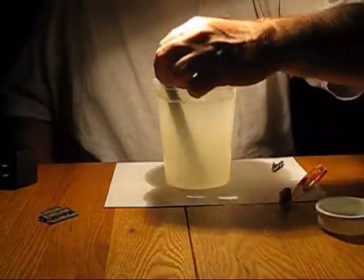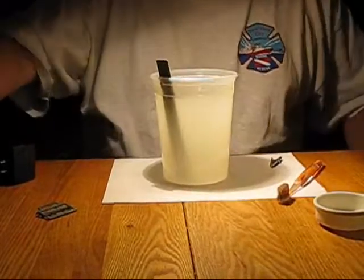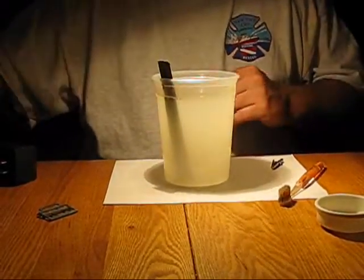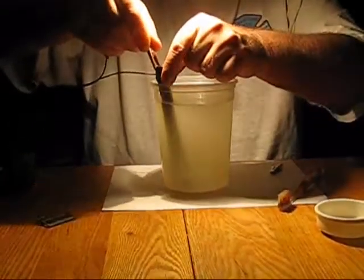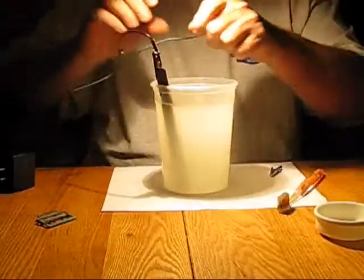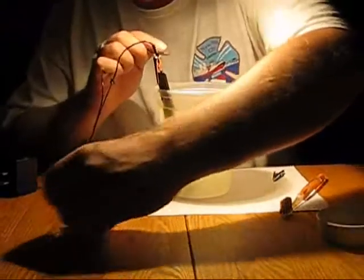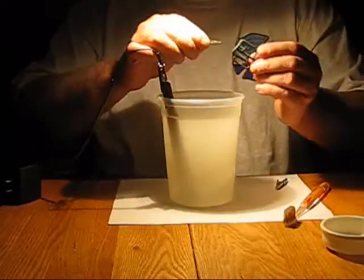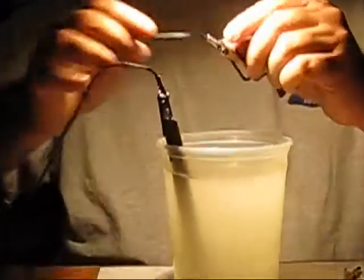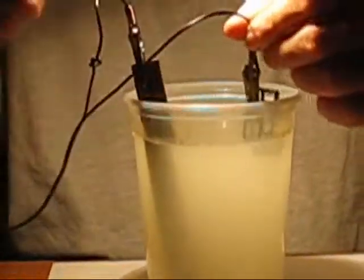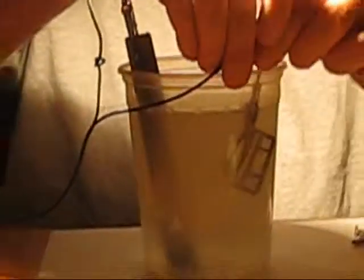You want to leave your sacrificial steel sticking out of the solution. You don't want to bury this clip in the water. So now we're going to put in the positive. And we're going to take our buckle that we're cleaning. You want to hook that on to the negative. You want to take the buckle and put that down in the water.